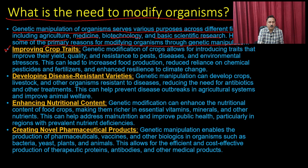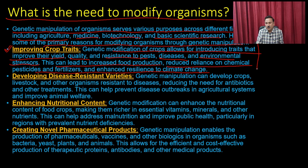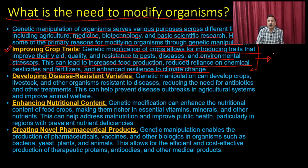The primary reasons for modifying organisms through genetic manipulation include: improving crop yield — genetic modification of crops allows for introducing traits that improve yield, quality, and resistance to pests, disease, and environmental stresses. This can lead to increased food production, reduced reliance on chemical pesticides and fertilizers, and enhanced resistance to climate change.